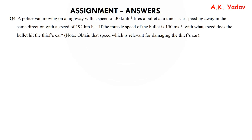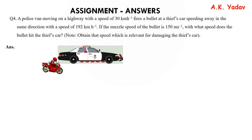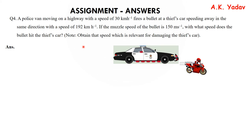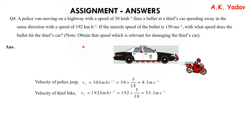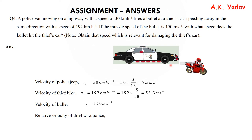Question number 4: A policeman in a van moves at 30 km/h; the thief rides at 192 km/h; muzzle speed is 150 m/s. Velocity of van = 30 km/h = 8.3 m/s; velocity of thief's bike = 192 km/h = 53.3 m/s; bullet = 150 m/s. Both move in the same direction, so relative velocity of thief with respect to police = 53.3 − 8.3 = 45 m/s.